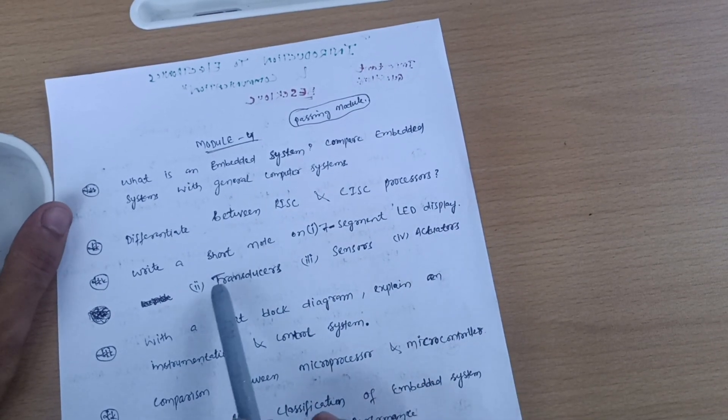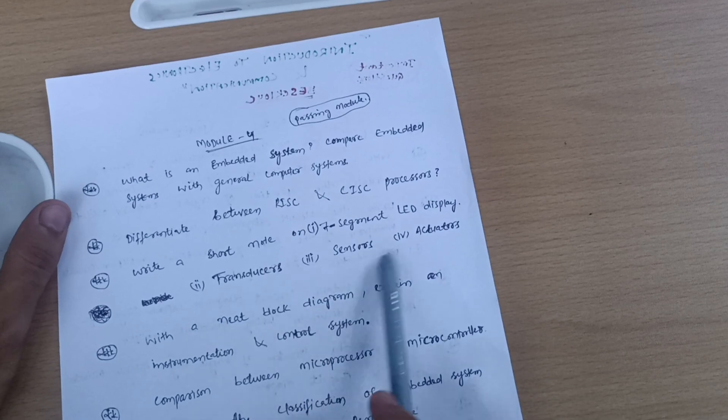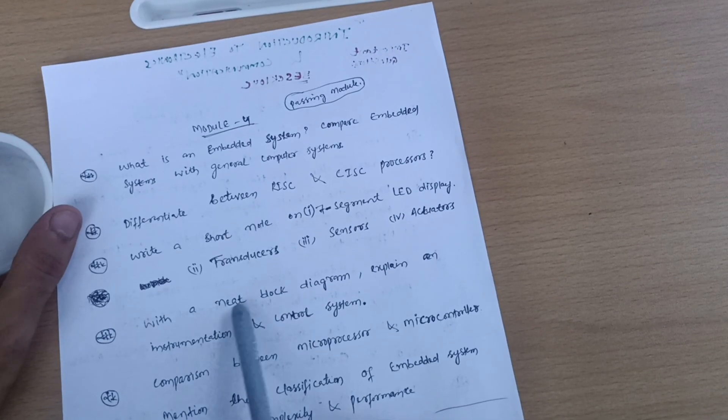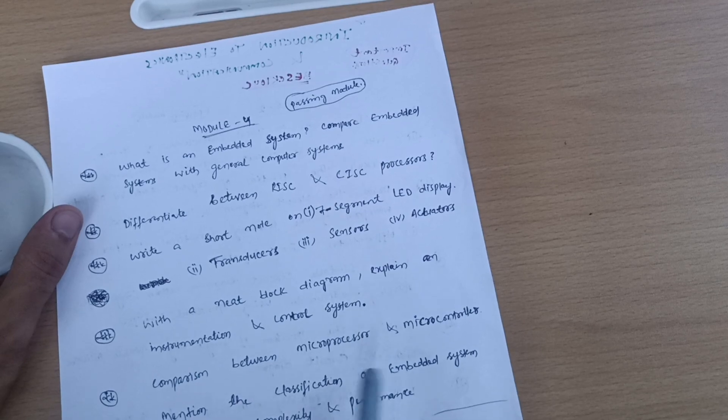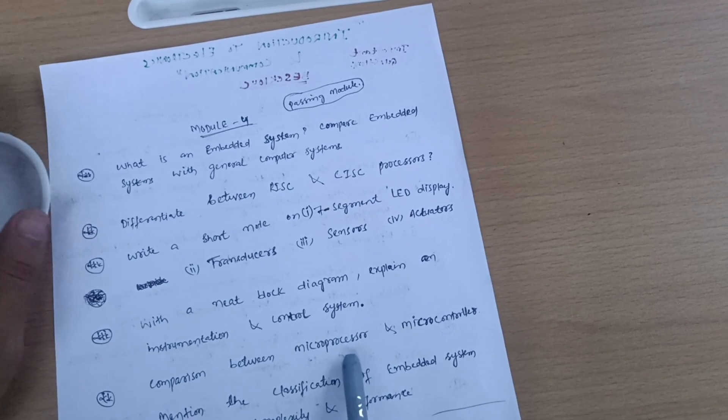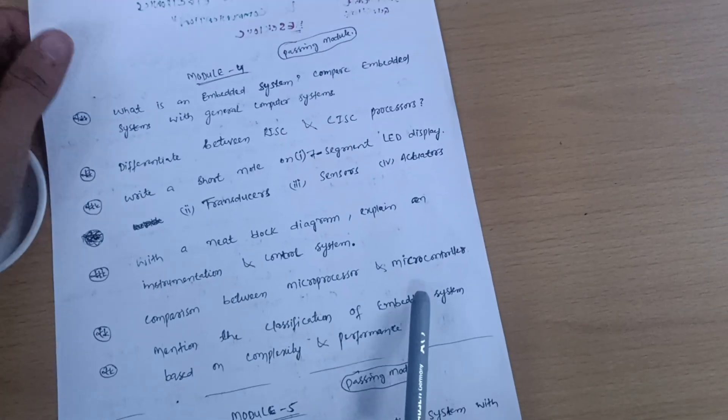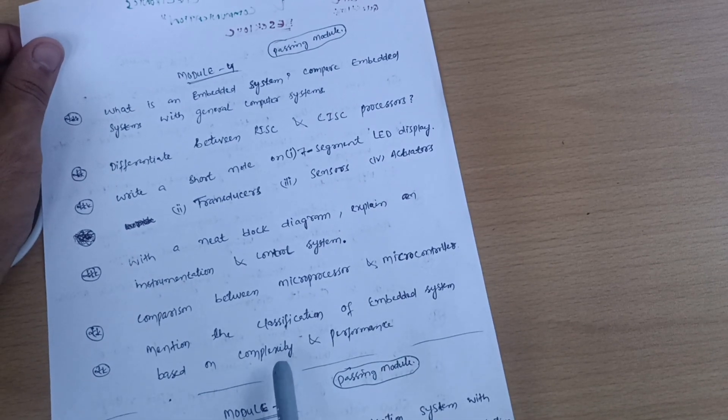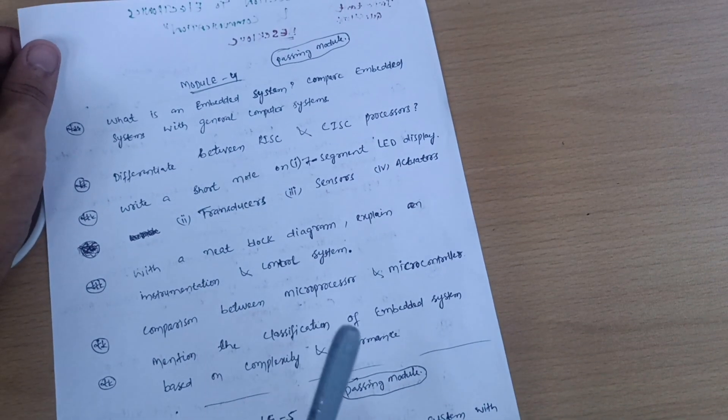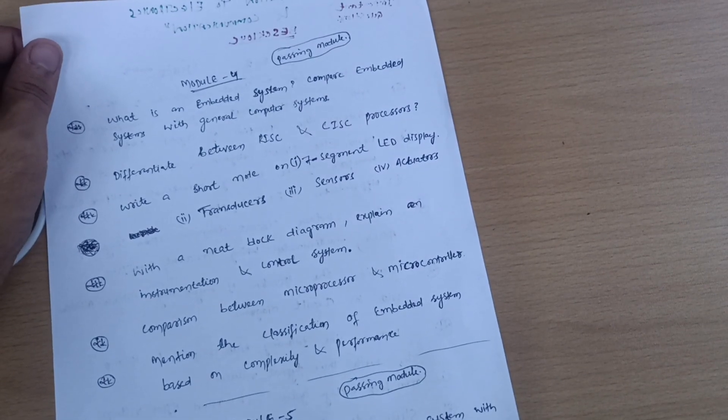Also write short notes on transducers, sensors, and actuators with neat block diagram. Explain instrumentation and control systems. Compare microprocessor and microcontroller. Mention the classification of embedded systems based on complexity and performance. In this module you can easily score 20 marks - this is a theoretical module.